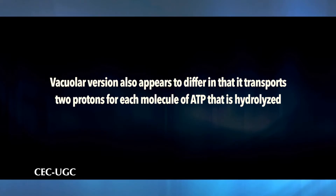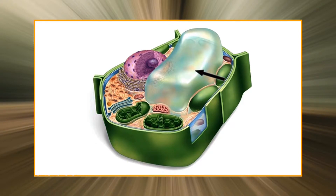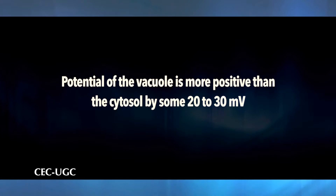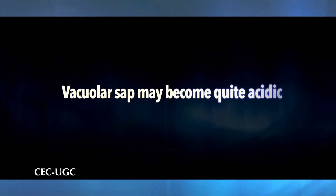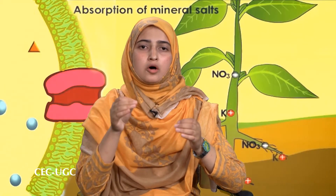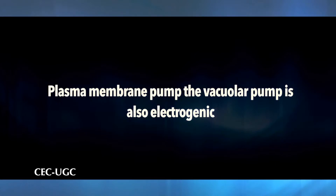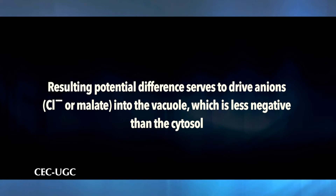The vacuolar version also appears to differ in that it transports two protons for each molecule of ATP hydrolyzed. The function of the vacuolar ATPase is to pump protons from the cytosol into the vacuole, accounting for the fact that the vacuole potential is more positive than the cytosol by some 20 to 30 millivolts. In extreme cases, large pH gradients can be maintained across the vacuolar membrane, and the vacuolar sap may become quite acidic — for example, the pH of lemon juice, which is predominantly vacuolar sap, is normally about 2.5. Like the plasma membrane pump, the vacuolar pump is also electrogenic; accumulated protons serve to reduce the potential of the vacuole relative to the cytosol, driving anions such as chloride or malate into the vacuole.